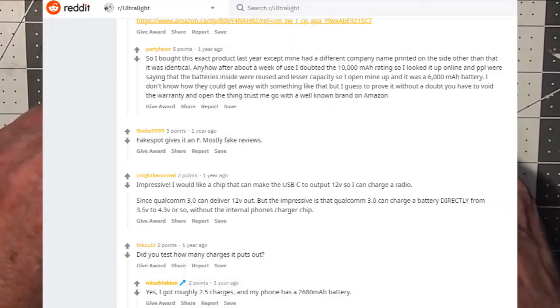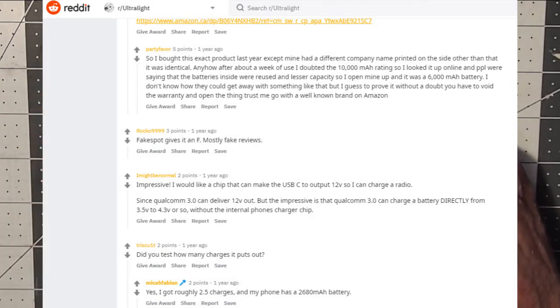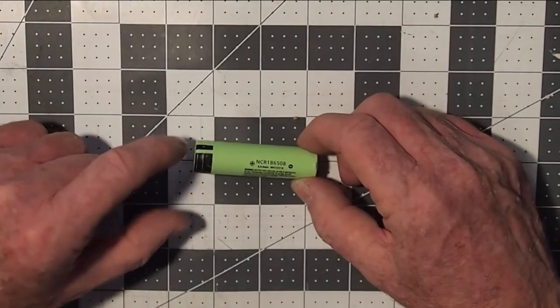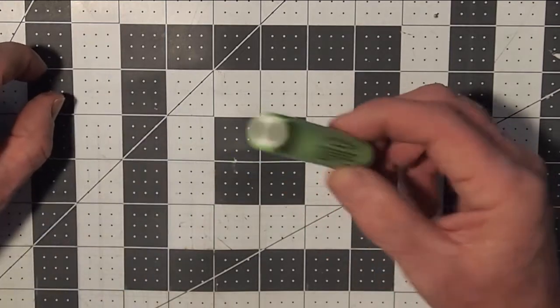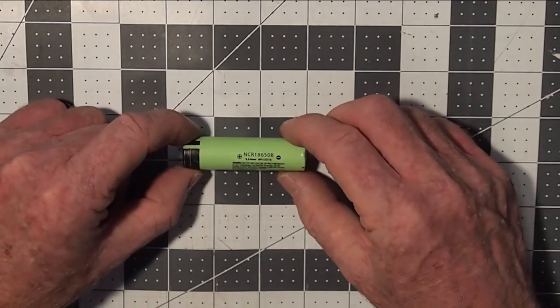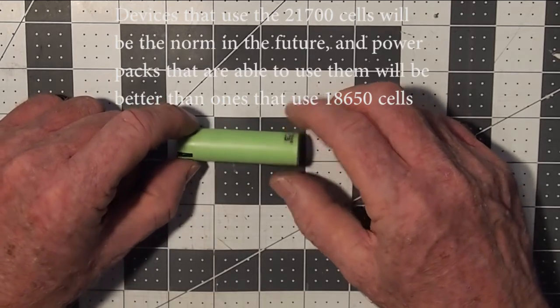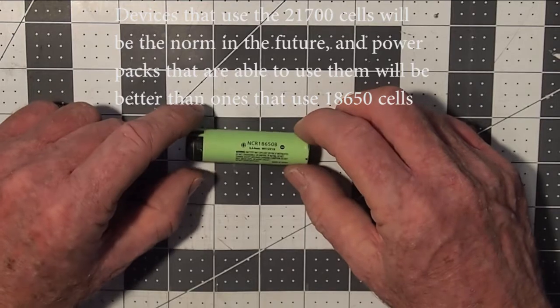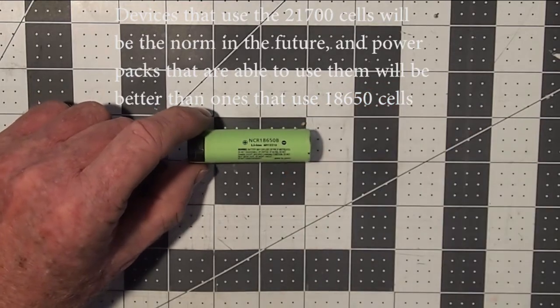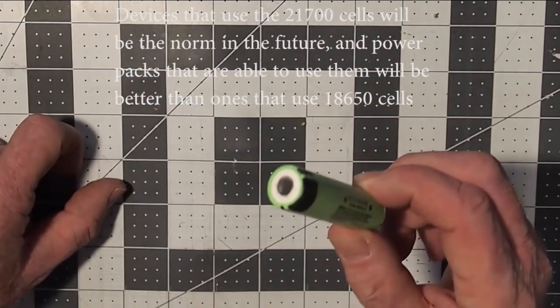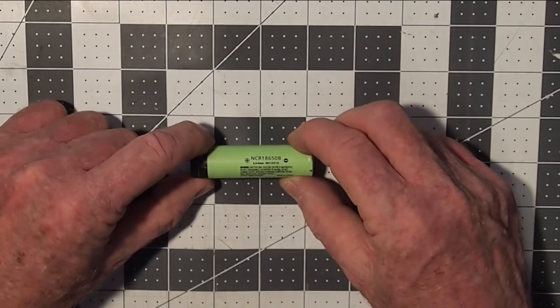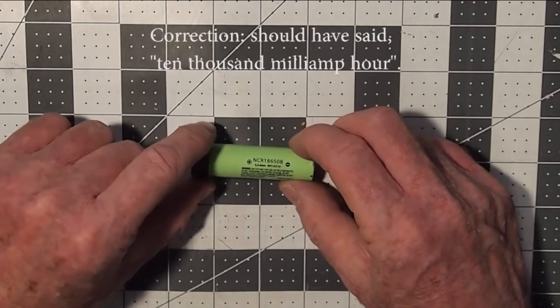So take a look at this cell here. This is an 18650 cell, the most ubiquitous cell on the planet and was used by Tesla until they upgraded to the 21700 cell in their Mark III series. Consider this still to be the number one cell available. This is the Panasonic NCR18650B, and one of the reasons it's so highly thought of is it puts out 3400 milliamps. You would require three of these in order to make up a 10,000 amp hour battery pack.